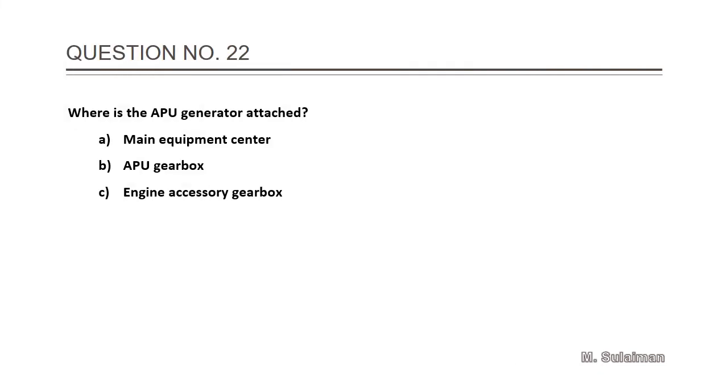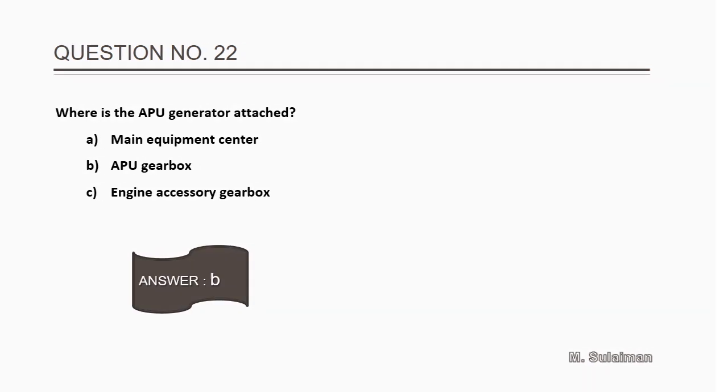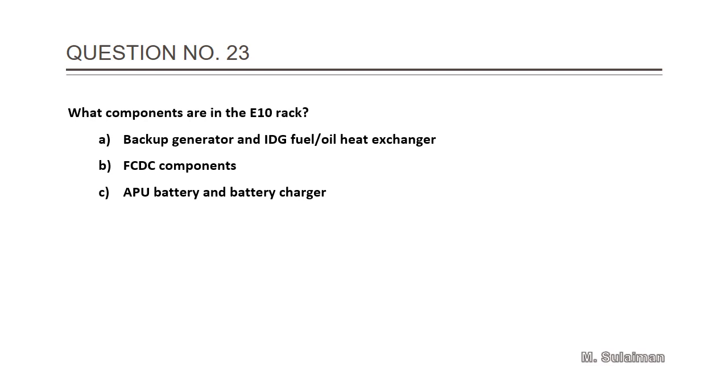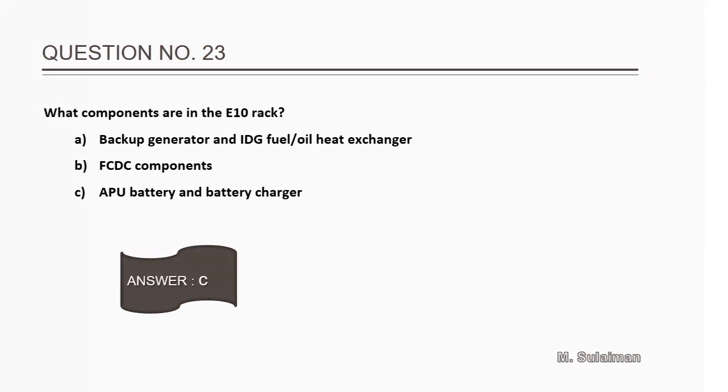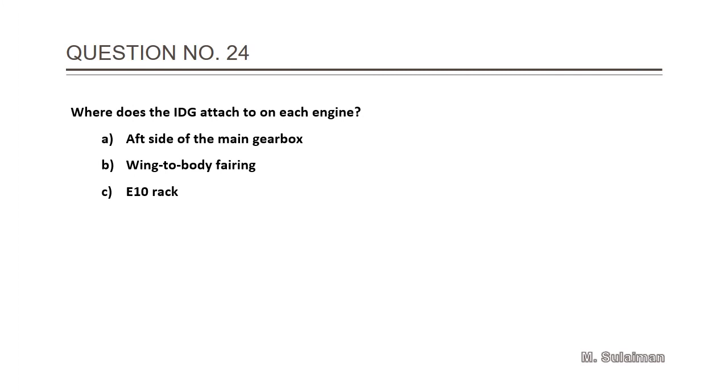Question 21: What components are in the E5 rack? Answer is C: FCDC components. Question number 22: Where is the APU generator attached? The answer is B: APU gearbox. 23: What components are in the E5-10 rack? The answer is C: APU battery and battery charger. Number 24: Where does the IDG attach to on each engine?